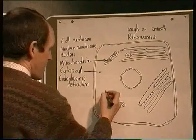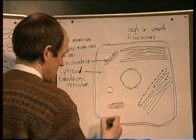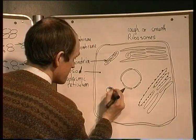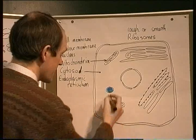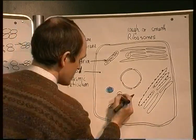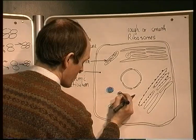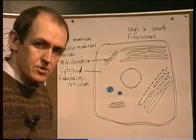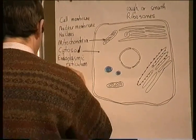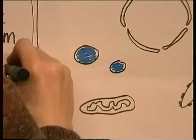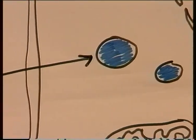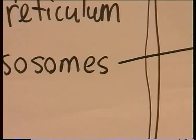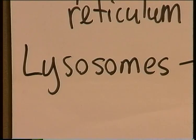Another structure that can be seen are vesicle-bound structures with a fluid inside them. You usually see a few of these if you look carefully inside the cell in different places in the cytoplasm. These structures are referred to as lysosomes — another organelle found in the cytosol.